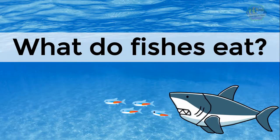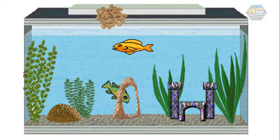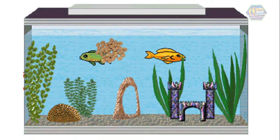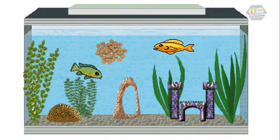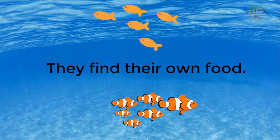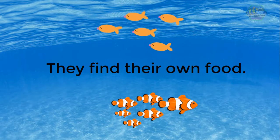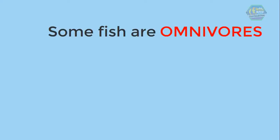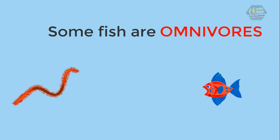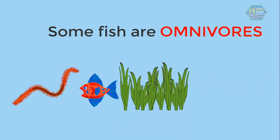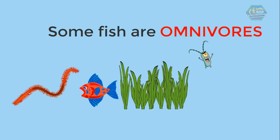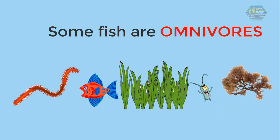What do fish eat? Fish in aquariums are fed food pellets, but in their natural homes like the ocean they find their own food. Some fish are omnivores, meaning they will eat other marine animals like worms, smaller fish, and crustaceans, and they can also eat plant matter and small organisms like plankton and mosses.